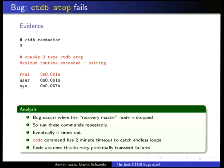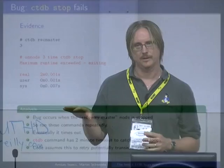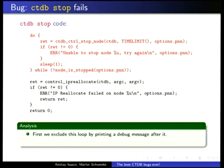The CTDB command has a two-minute timeout to catch endless loops. Because some error handling is shoddy and we can't always tell the difference between a temporary and permanent failure, we spin forever retrying — that's why we see two minutes. Here's the CTDB stop code: there's a loop at the top that checks if the flag that a node is stopped is set, keeps trying to set it, and when finally set, the loop terminates. We can exclude this by printing a message and doing really dumb debugging — we do get past that point.